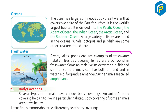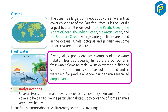Rivers, lakes, ponds, etc. are examples of fresh water habitats. Besides oceans, fishes are also found in fresh water. Some animals live entirely inside water, e.g. fish and shrimp. Some animals can live both on land and in water, e.g. frog and salamander. Such animals are called amphibians.